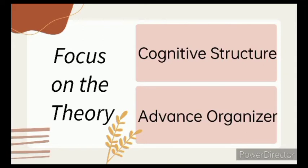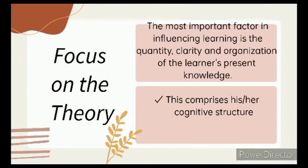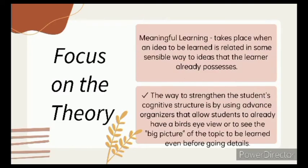And these two are the main subjects in the theory. The second one is that the most important factor in influencing learning is the quantity, clarity, and organization of the learner's present knowledge. This comprises his or her cognitive structure.